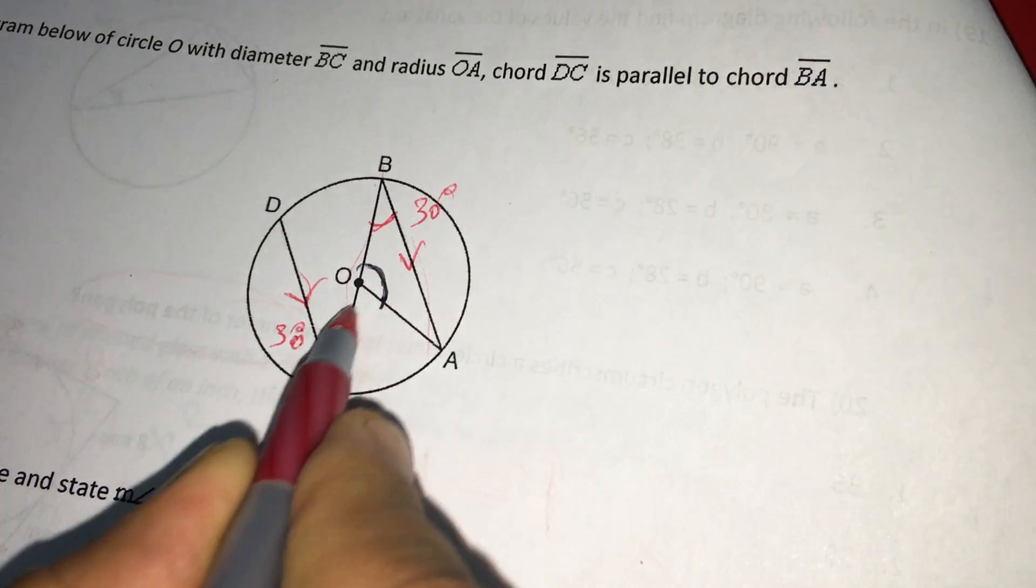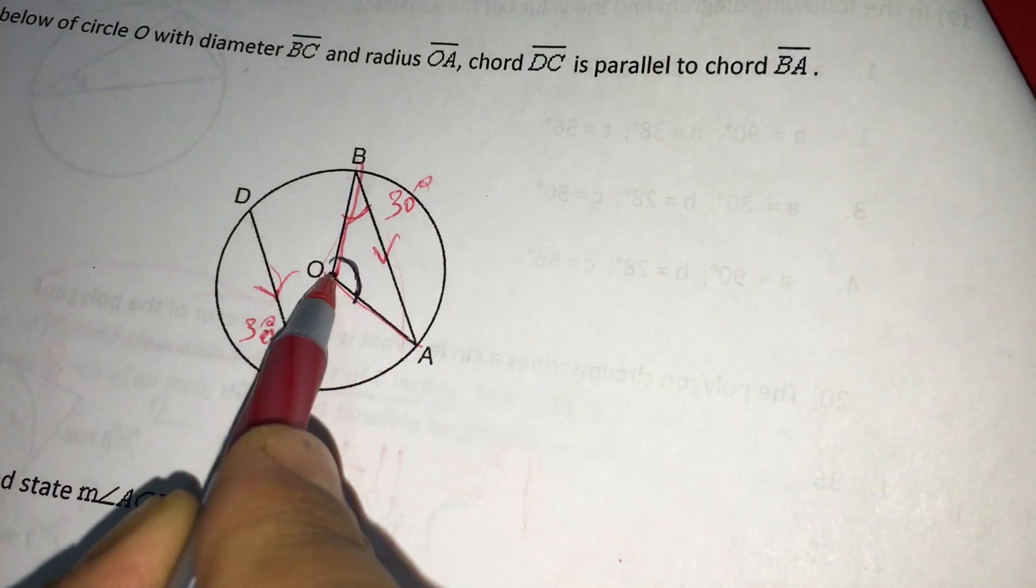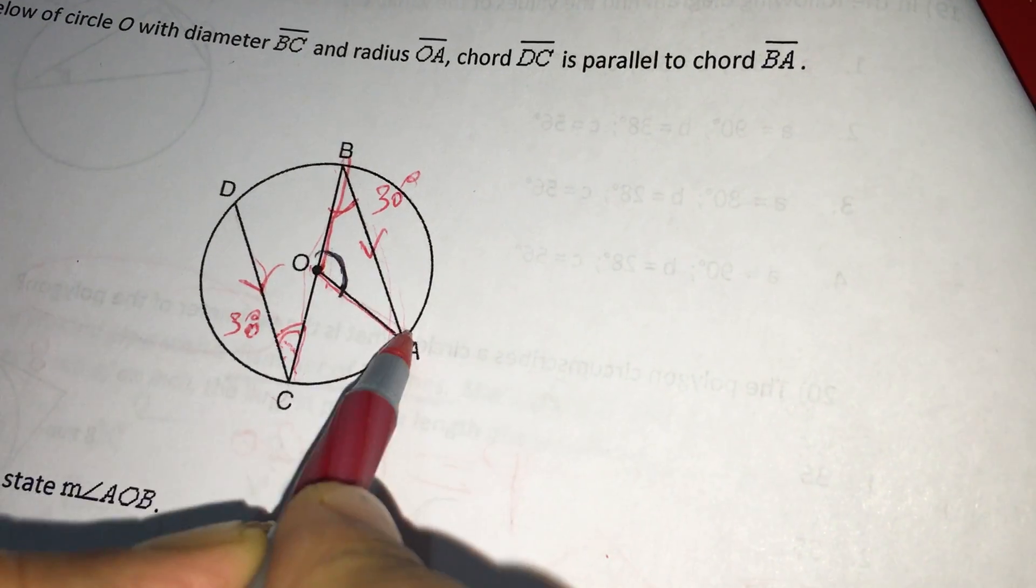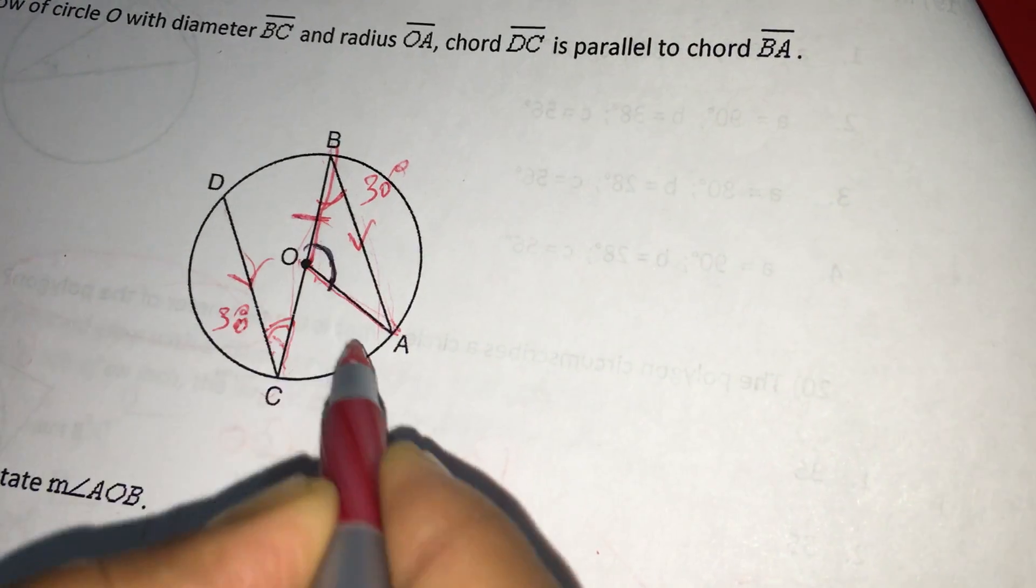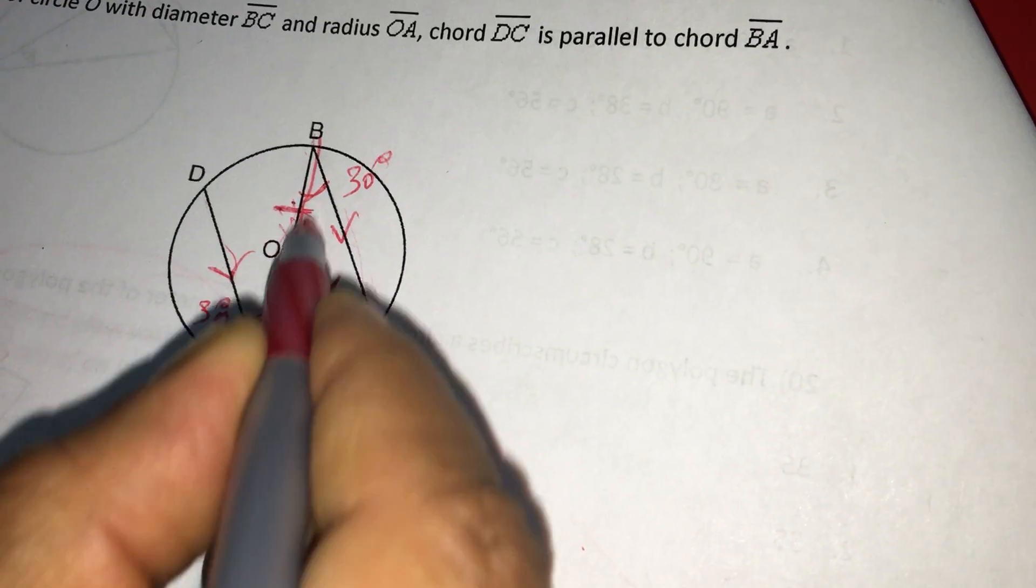Now, this OA is radius, OB is also radius. In this triangle OAB, these two sides are equal because they are radii. When these two sides are equal, these two angles must be equal.